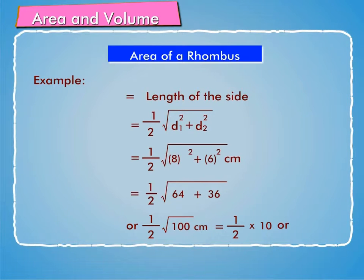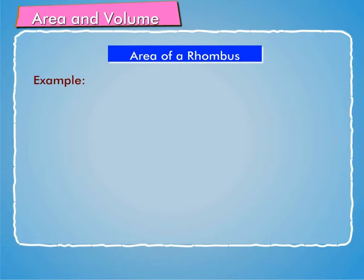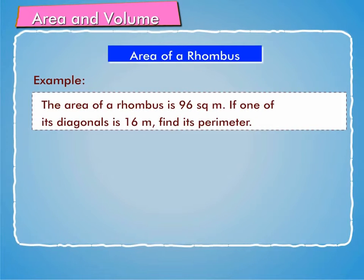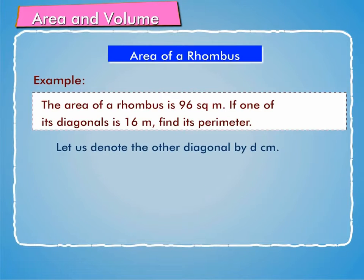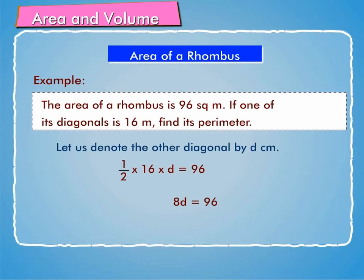Let us take another example. The area of a rhombus is 96 square m. If one of its diagonals is 16 m, find its perimeter. Let us denote the other diagonal by D. Then (1/2) × 16 × D = 96, therefore 8D = 96, or D = 96/8 = 12 m.